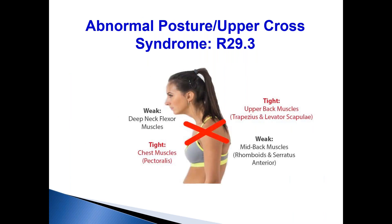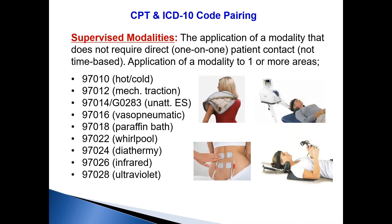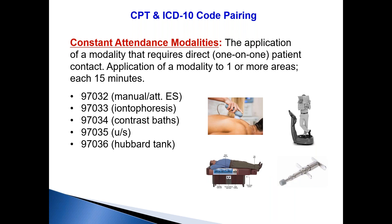Just about every single patient, regardless of their symptoms, will probably have some abnormal posture. There are a whole bunch of diagnosis codes. Then we have chiropractic CPT codes: 98940, 98941, 98942, and 98943. Modalities include supervised modalities — hot packs, cold packs, mechanical traction, unattended electrical stim — and constant attendance modalities like attended electrical stim and ultrasound, which are the two most common constant attendance modalities.